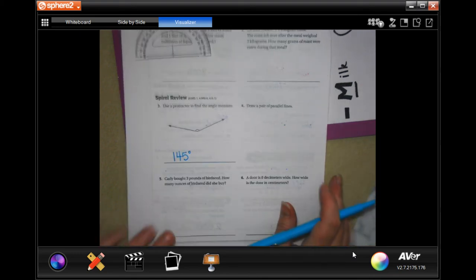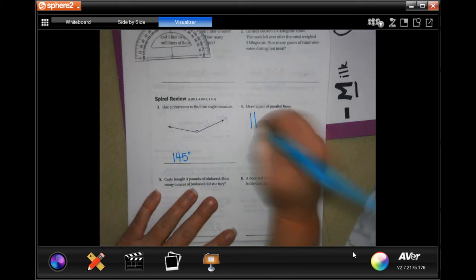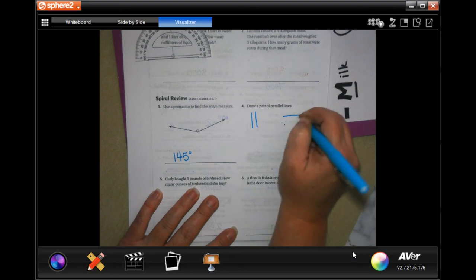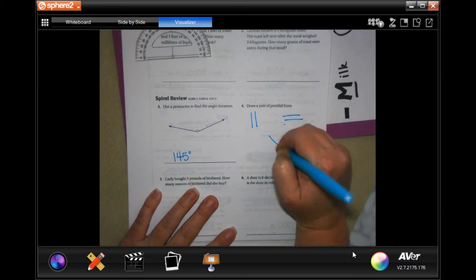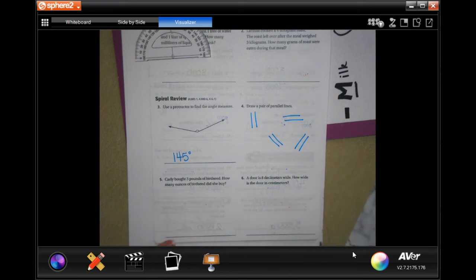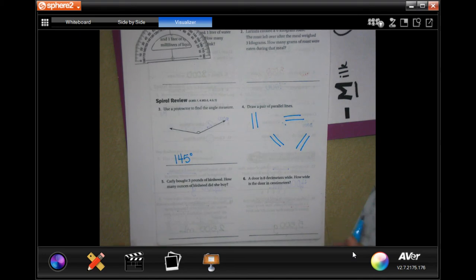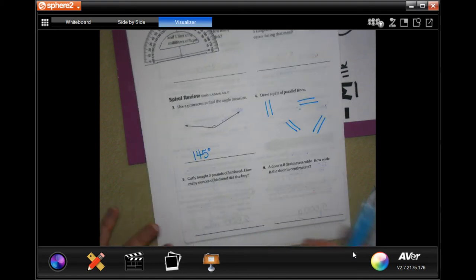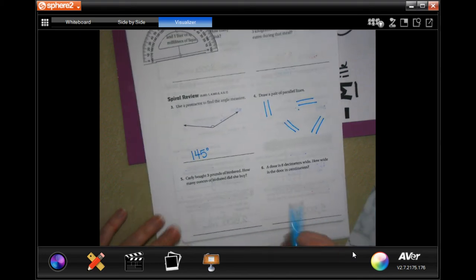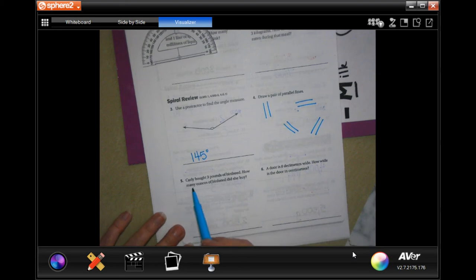Draw a pair of parallel lines. Well, you could draw these, you could draw these, you could draw these, you could draw these - any straight lines that are never going to meet. You can just pick one of those. You don't have to do them all.